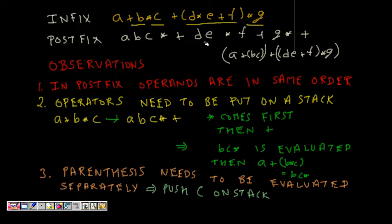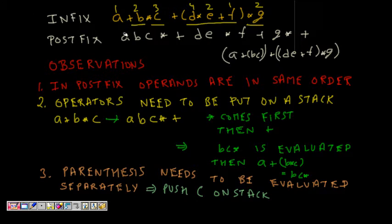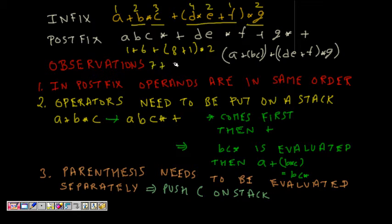Let's assign values: a=1, b=2, c=3, d=4, e=2, f=1, g=2, keeping numbers small for easier evaluation. The infix evaluates as: one plus two into three is six, plus four into two is eight, plus one into two — giving seven plus nine into two, that is 18, so the result is 25.